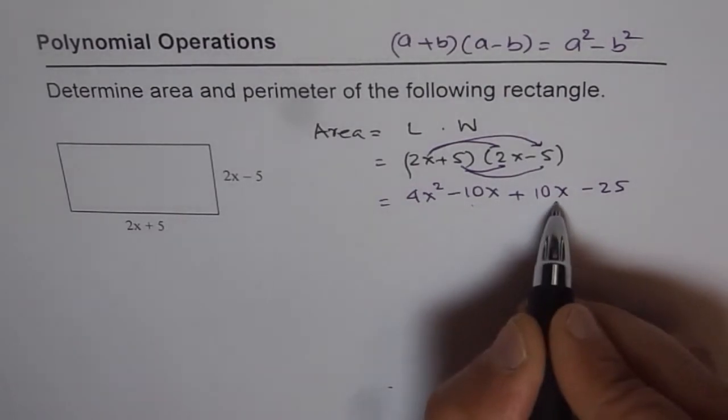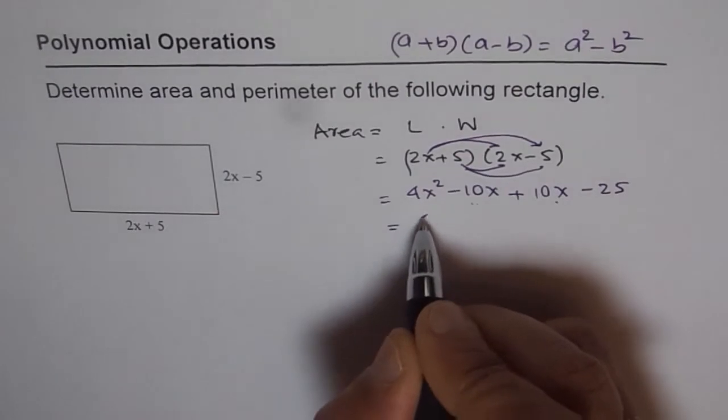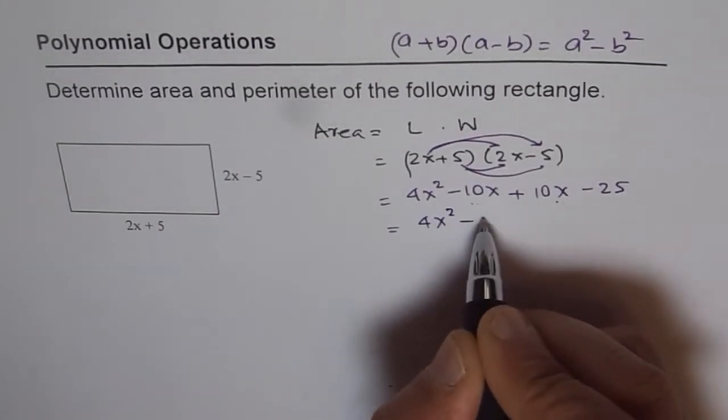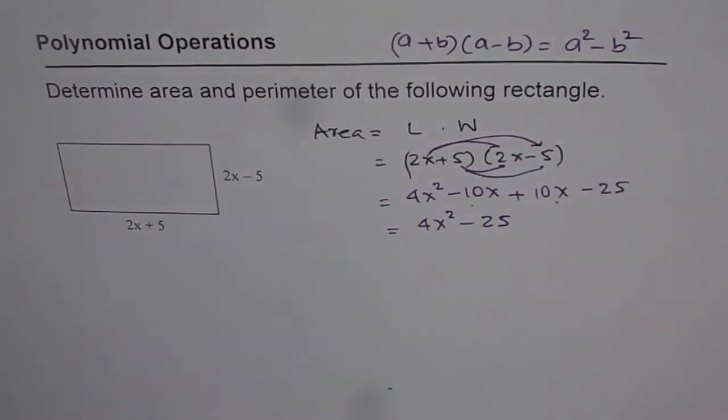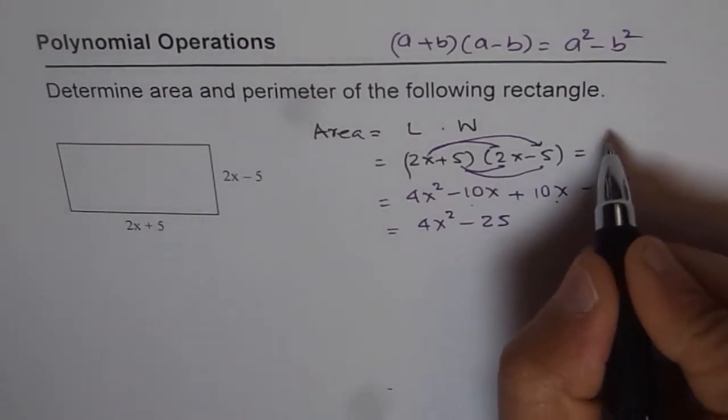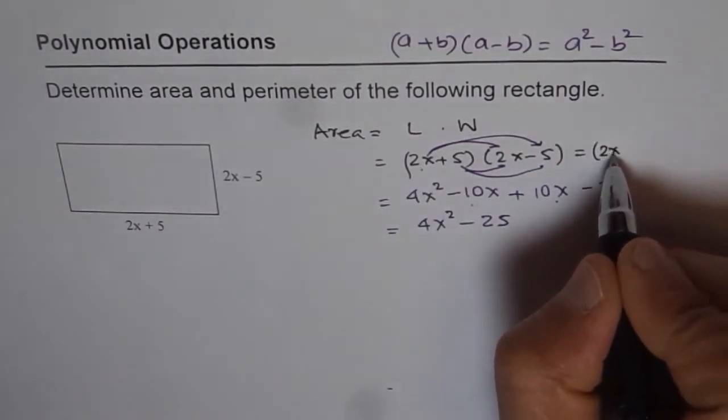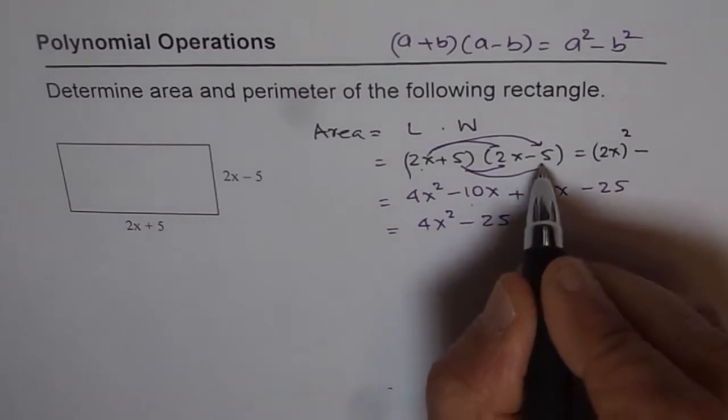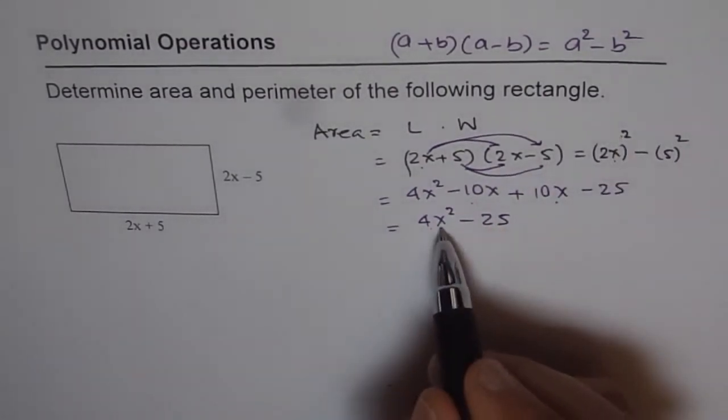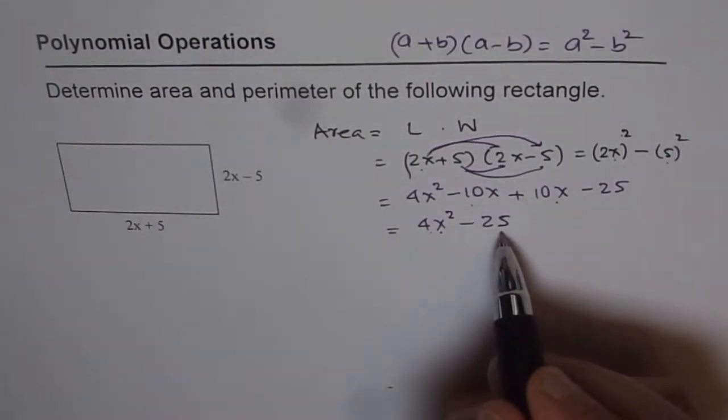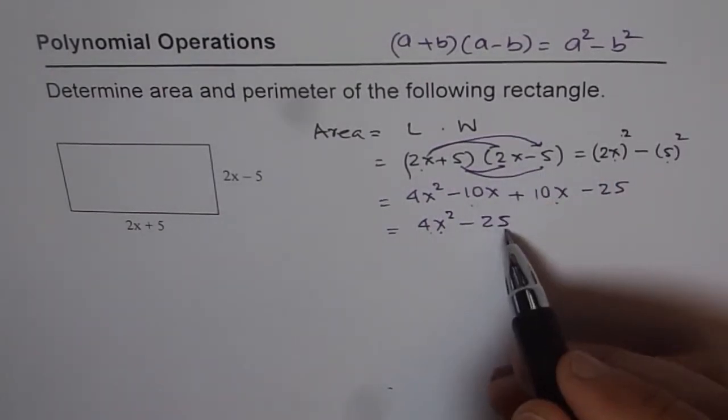Now plus 10x and minus 10x becomes 0, right? When you add them. So we are left with 4x squared minus 25. If you check a squared minus b squared, let us do it on the side using this formula. So if you use the formula, you get a squared, which is 2x whole squared minus b squared, which is 5 squared. 2x whole squared is 4x squared and 5 squared is 25. So you get it even otherwise. So you can use the formula and get the answer.